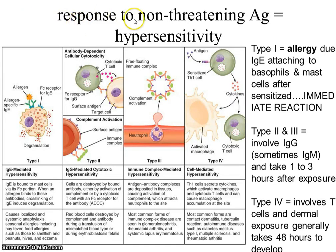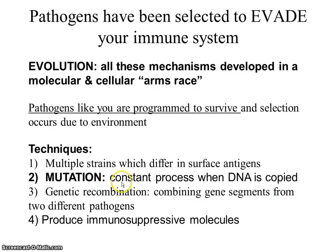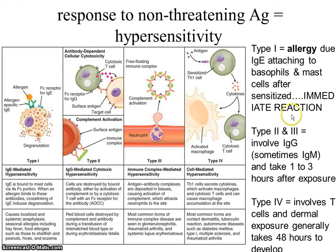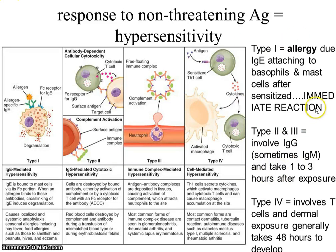Ways that we don't defend ourselves appropriately include allergy - a response to a non-threatening antigen. We call that hypersensitivity, and we divide it into four basic types. The key things to know are how quickly the response develops and who is responsible for the response. In Type 1, this is the immediate reaction, due to B cells producing a special class of immunoglobulin which attaches to basophils and mast cells, making them good at recognizing this antigen - which we now call an allergen.